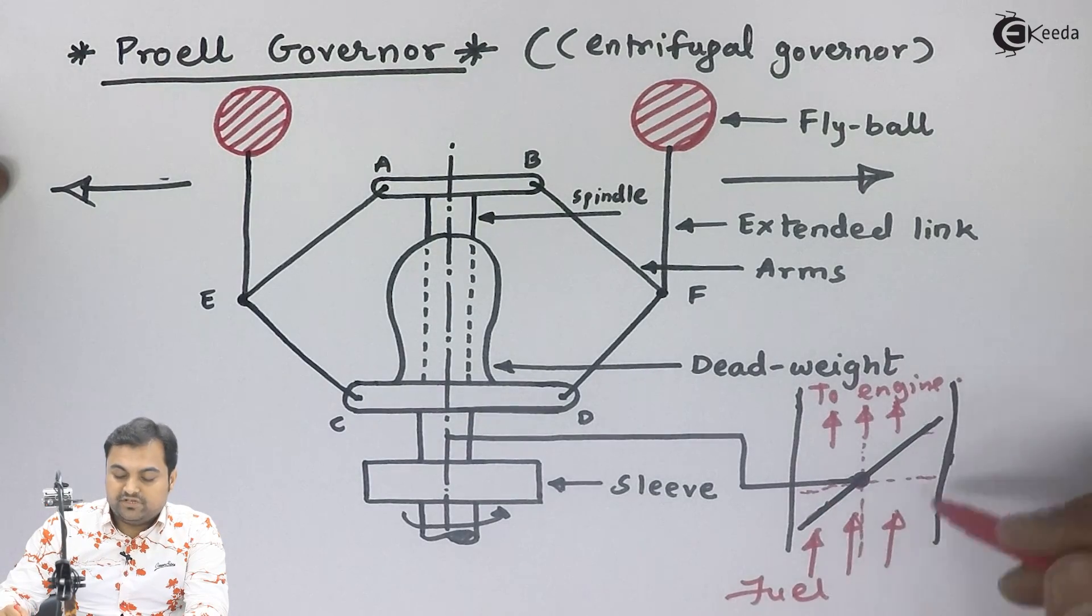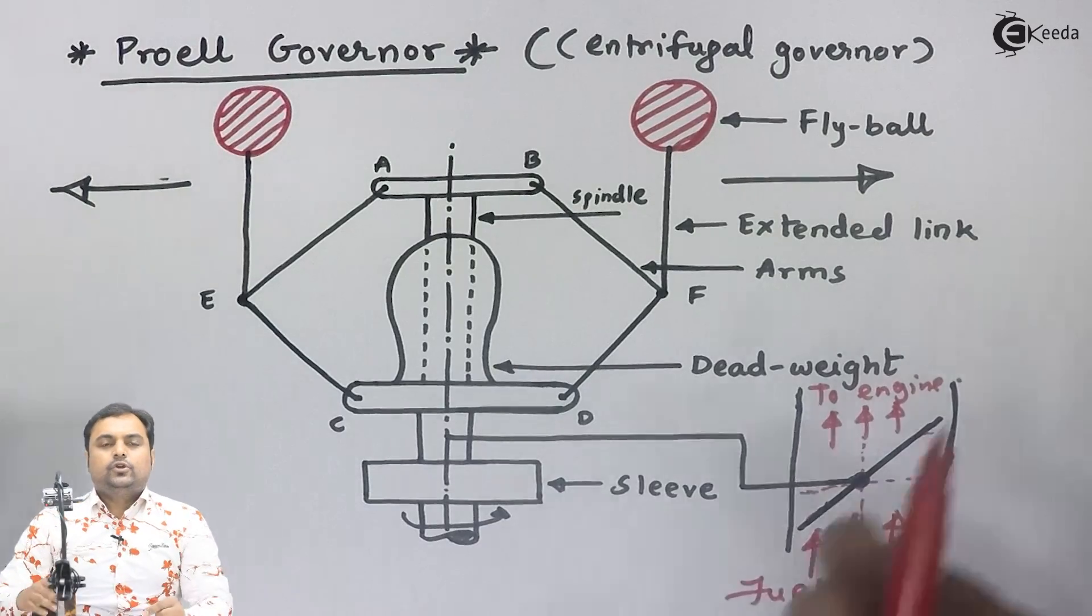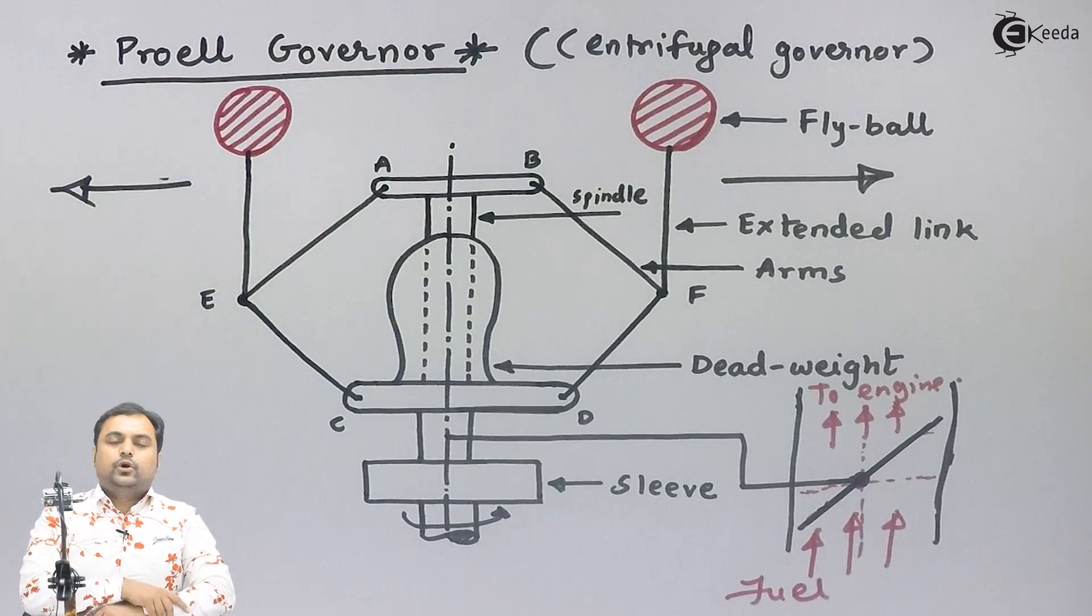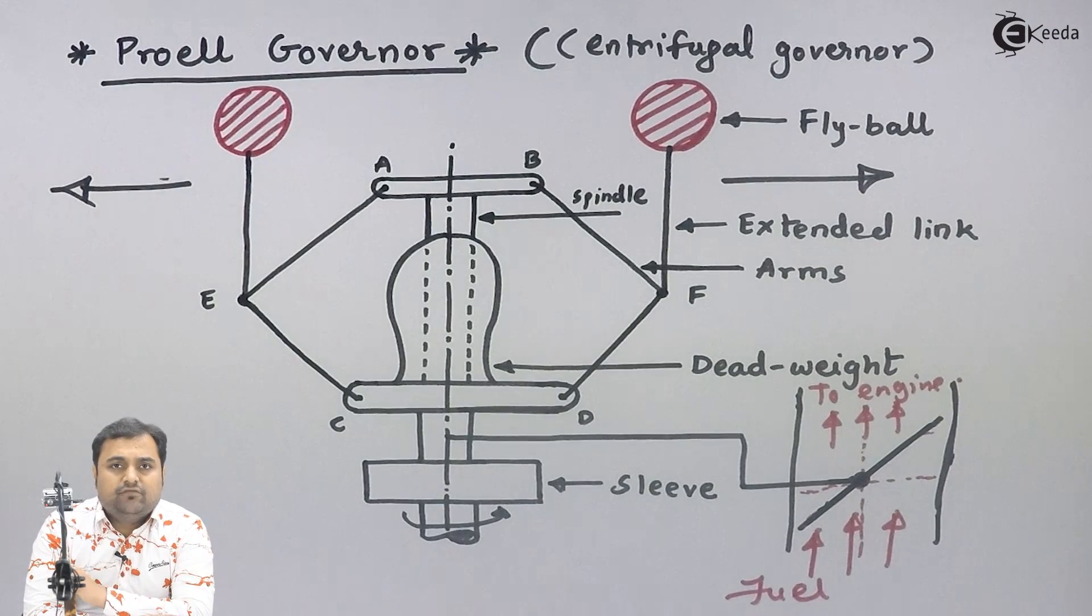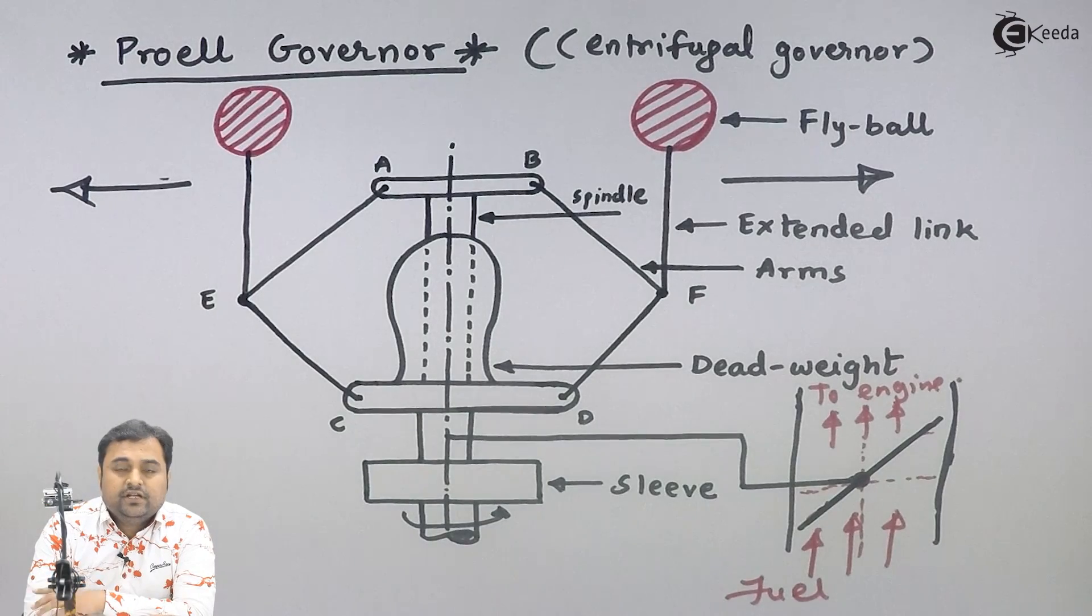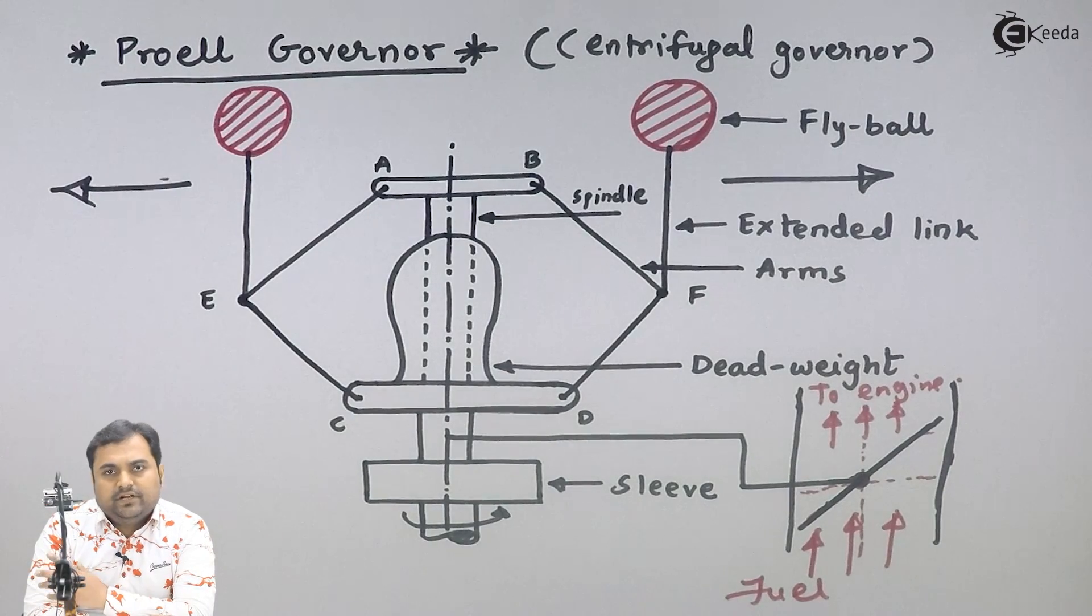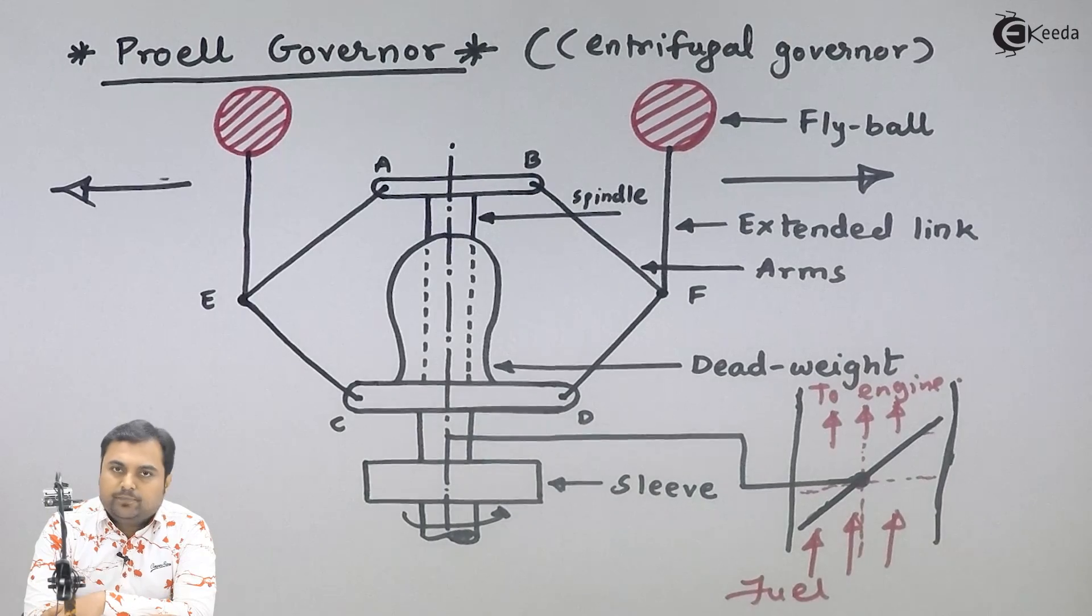In case of both Porter as well as Proell governors, they control the supply of working fluid to the engine. By controlling the supply of working fluid to the engine, the speed of the engine can be controlled. This was regarding Proell governor.